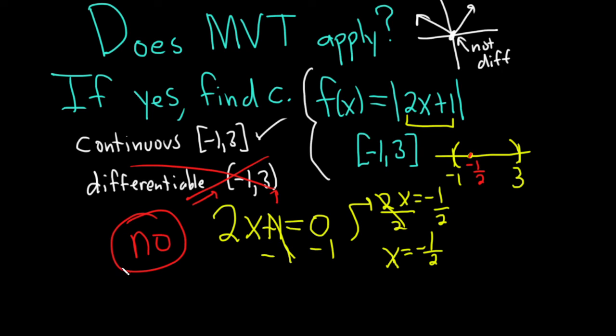The mean value theorem does not apply. If we had a different interval, for example [5,10], then we could use the mean value theorem and find c, because -1/2 is not in that interval. It's really important to check whether the point where there's a problem is in your interval. Sometimes it is, sometimes it's not. In this case, it was inside our interval.